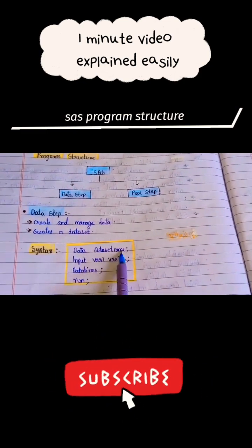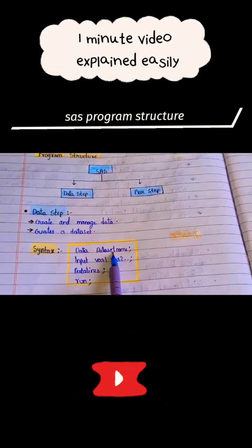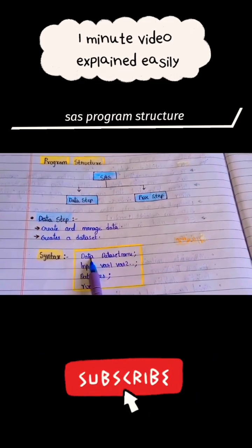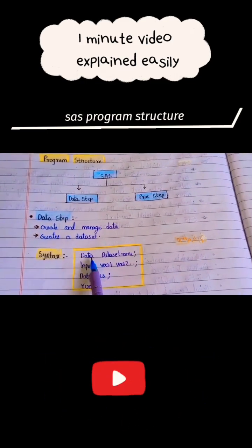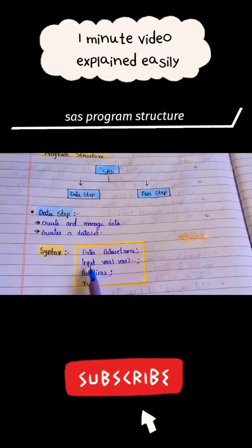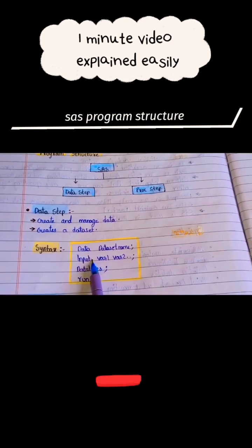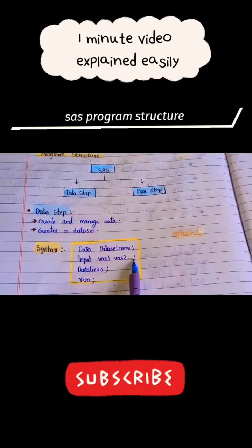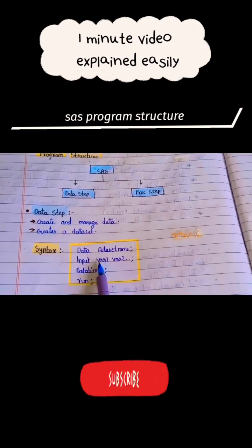You can change and write whatever you want here, but DATA is a keyword, so we should begin the program with the keyword DATA and end with a semicolon. Clear? And INPUT - INPUT means it will create the variables, so var1, var2, and so on. It will create the variables.